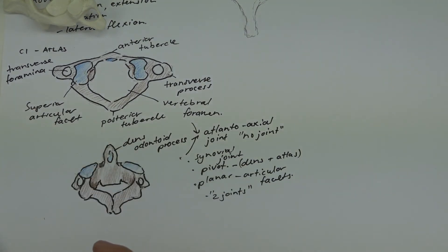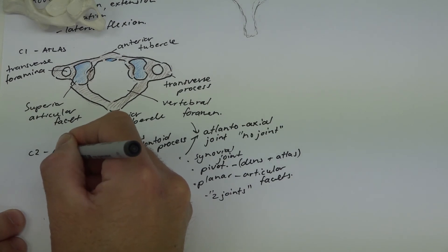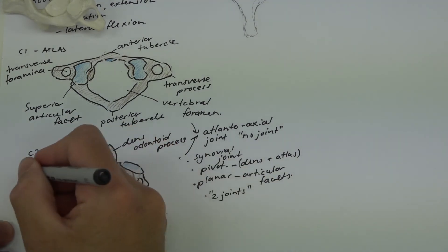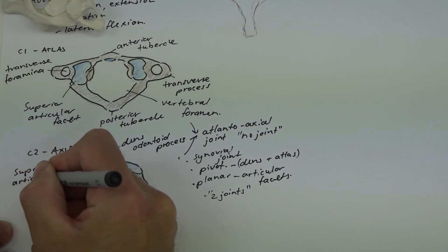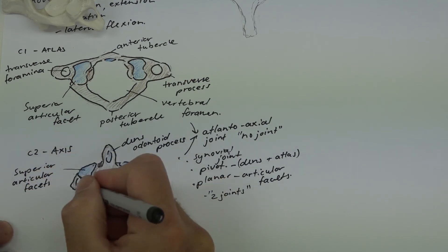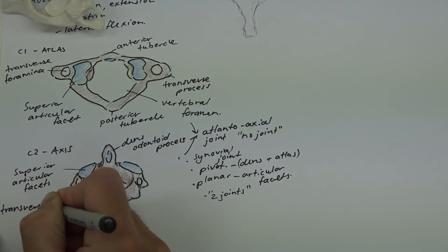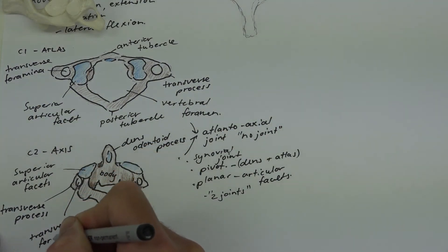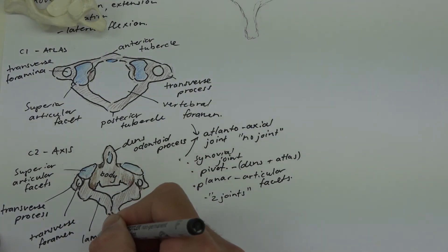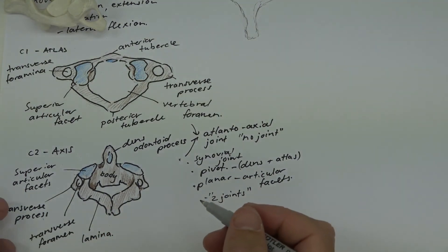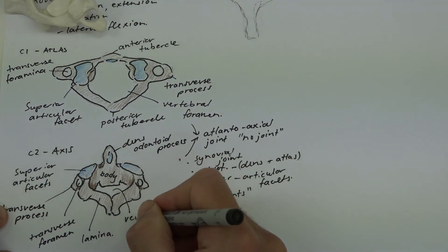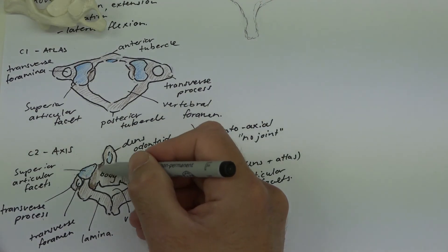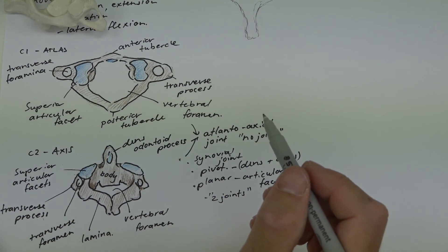Features shared by C2 the axis include: a body, superior articular facets, a transverse process, a transverse foramen, a lamina, a vertebral foramen, and a pedicle. These are features we'll see on other bones as we go through the series.